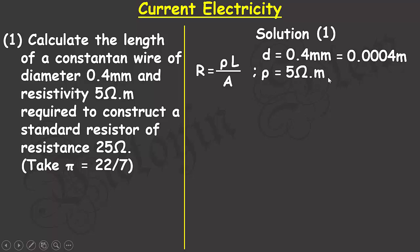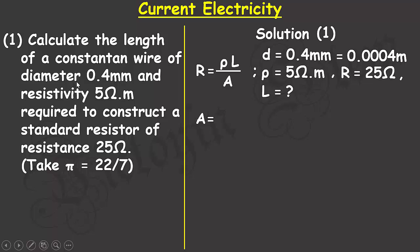The resistance is given as 25 ohms, but the length of the wire is not known — that is what I am expected to calculate. Because the diameter of the wire was given, I can say the cross-sectional area of the wire is circular in nature.